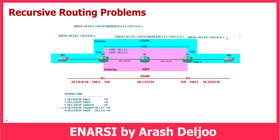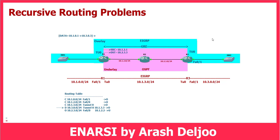Now let me explain what happens when we have the recursive routing problem. We are configuring OSPF on the underlay and EIGRP on the overlay. The underlay routing protocol and overlay routing protocol have no relation — both are independent. You can configure EIGRP on both, OSPF on both, or different protocols. These two routing protocol instances are different.